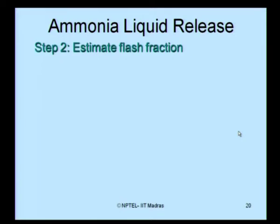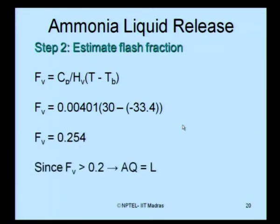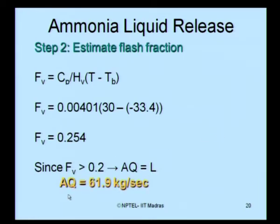In Step 2, we estimate the flash fraction. Whether the released liquid forms a flash depends on its boiling temperature. The flash fraction is calculated from the standard expression using Tb (boiling temperature), T (operating temperature = 30°C), and Cp/ΔHv from chemical tables. Substituting gives a flash fraction of 0.254. Since this value is greater than 0.2, the total airborne quantity equals simply the liquid release rate from Step 1. Therefore, AQ = 61.9 kg per second.